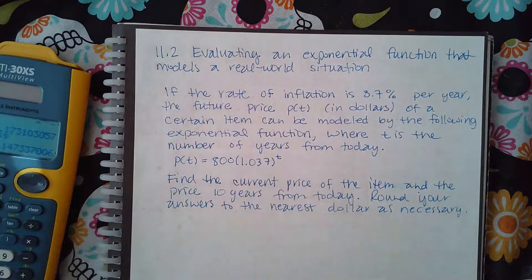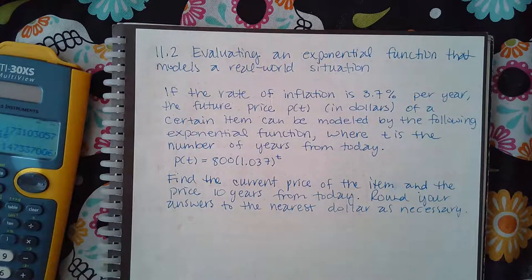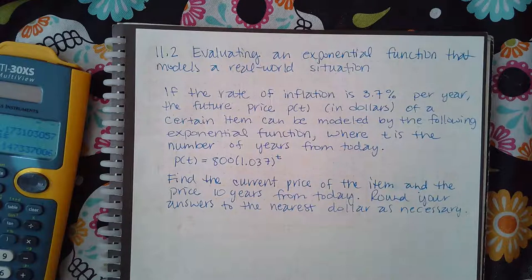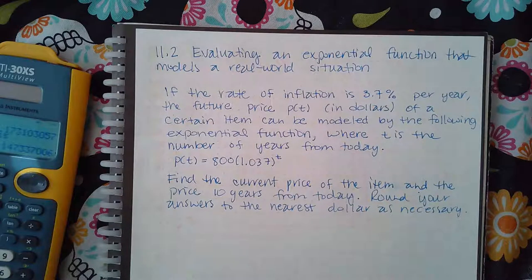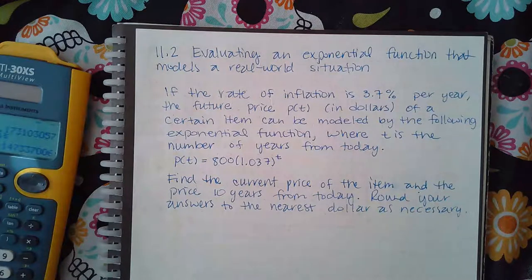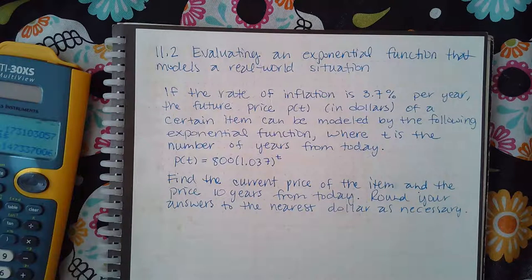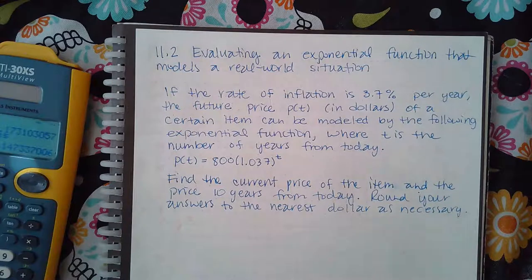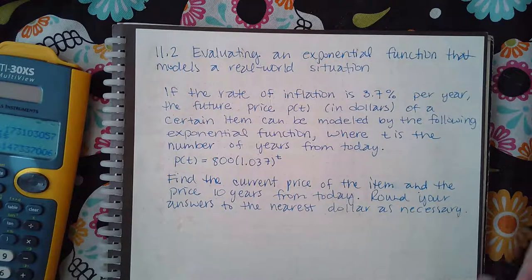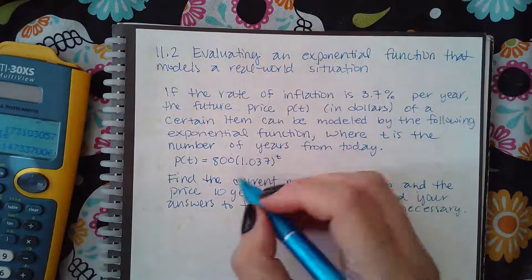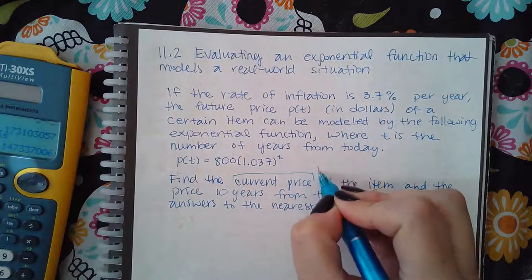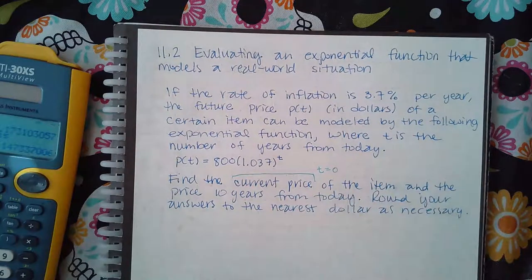Find the current price of the item and the price 10 years from today. Round your answers to the nearest dollar as necessary. If they're asking me for the current price and t is the number of years from today, current price means what's happening today, right now. So that means no years have passed from today.